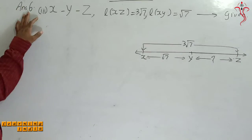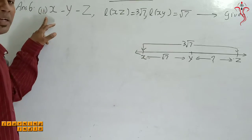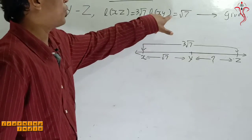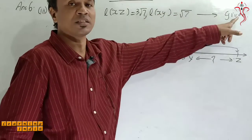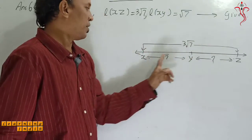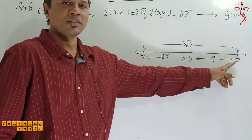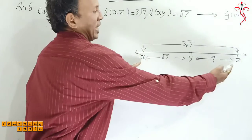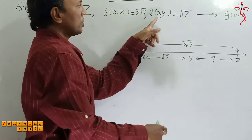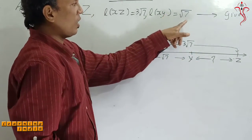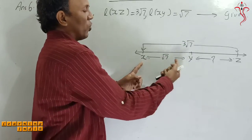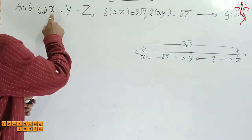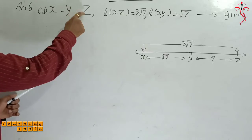Now question number 6 ka sub-part third. X-Y-Z, XZ ka value 3√7, XY is given as √7. XYZ are written here, XZ ka value 3√7, XY ka value √7.